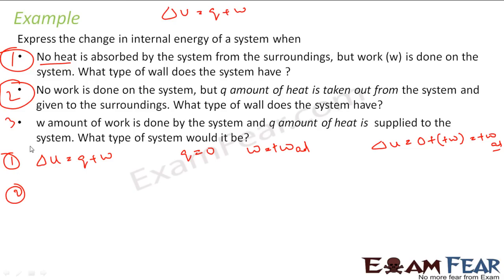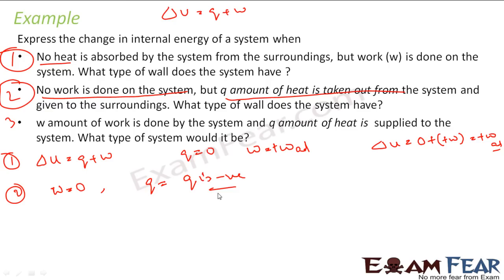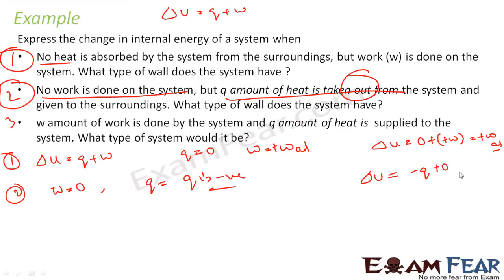Case 2: No work is done on the system, but Q amount of heat is taken out from the system. Using ΔU = Q + W: work done is 0. Heat is taken out from the system, so the system becomes weaker — Q is negative, so it is −Q. Therefore ΔU = −Q + 0 = −Q.